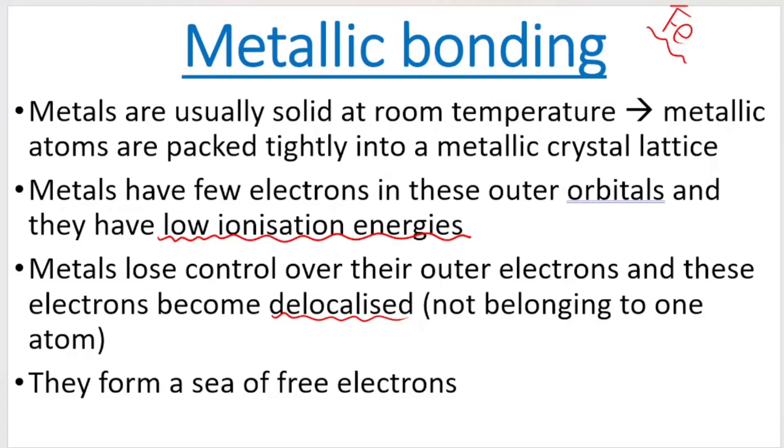Another thing to understand about metals is metals have few electrons in the outer orbitals. So go back to my videos about orbital diagrams and energy levels if you need a recap on this. But you also need to know that metals have low ionization energies. That means that it's quite easy to remove those electrons in the outer orbitals. Going on to the third bullet point, it says metals lose control over the outer electrons quite easily because of the low ionization energies. And when they lose control over the outer electrons, these electrons become delocalized.